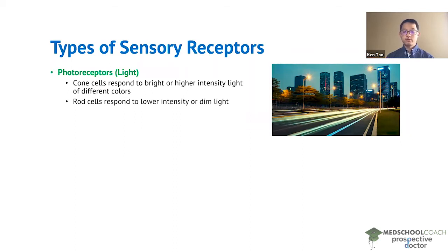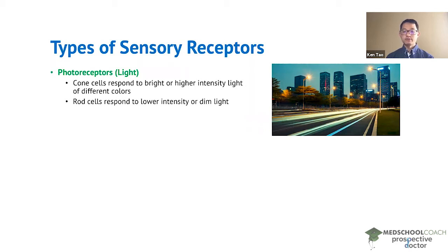We also have rod cells that are for low intensity light. In dim light situations, you can't really see different colors like blue, green, or red — everything appears black and white. That's because at low light intensity, cone cells are not activated so we cannot see color, but rod cells are activated so we can still see.